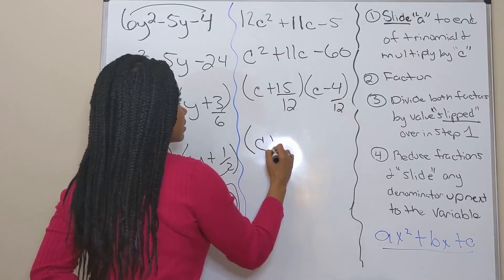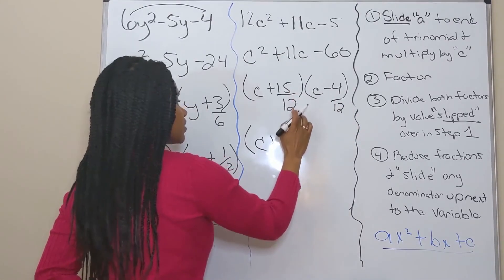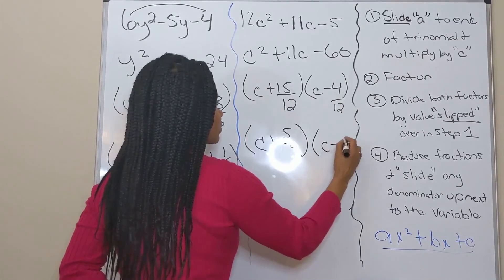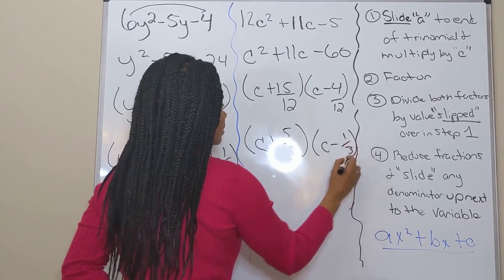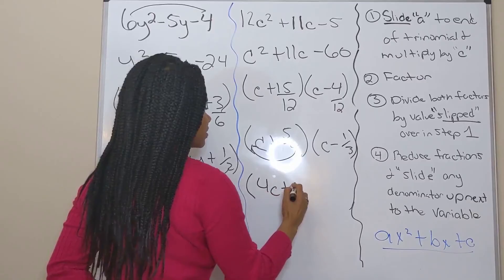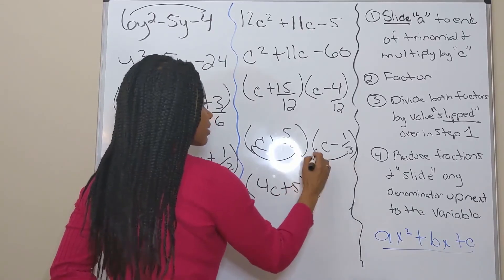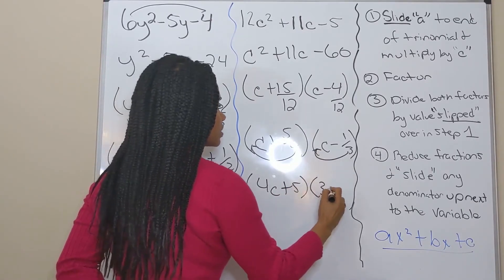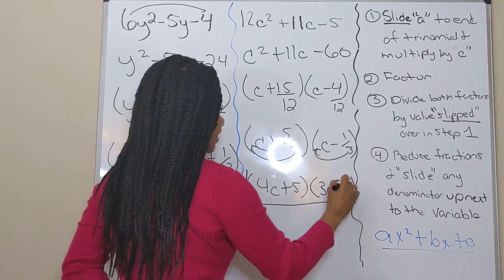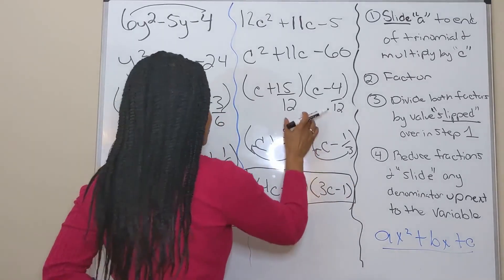Reducing 15 over 12 reduces to 5 fourths. 4 over 12 reduces to one third. Sliding that four up, I get 4c plus 5. Sliding the three up, I get 3c minus 1. All right, and so I have factored these two expressions as well.